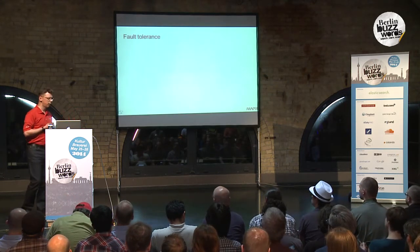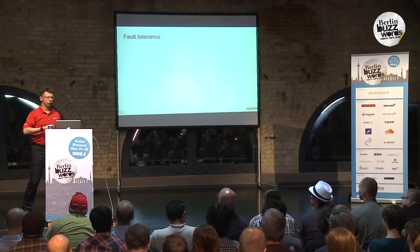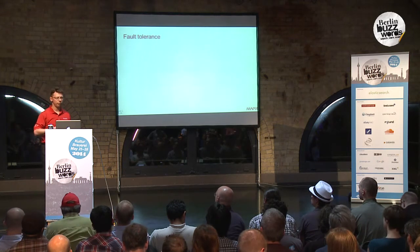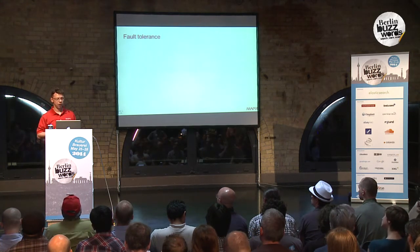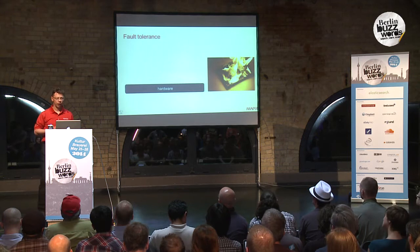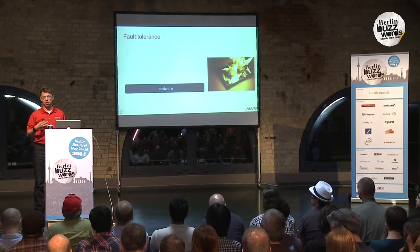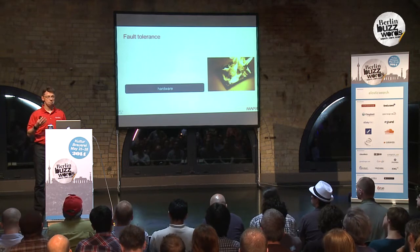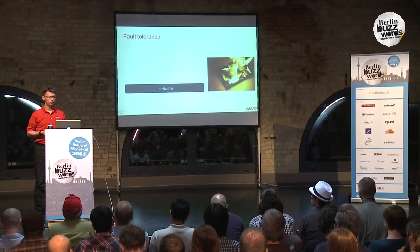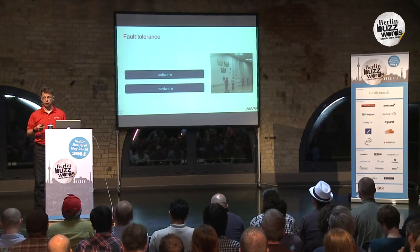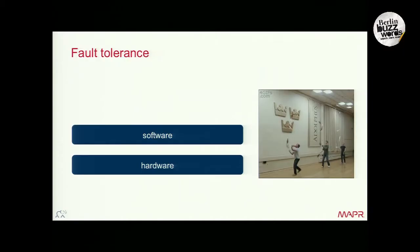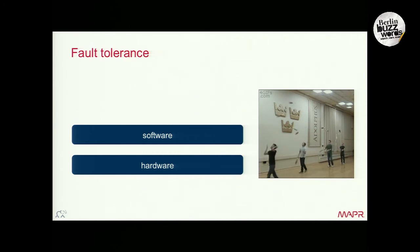Let's have a look at what fault tolerance might mean in a distributed system like Hadoop. We generally consider the hardware being commodity hardware — not that reliable. We compensate for that using software. Wherever you look — HDFS, HBase, whatever — you have mechanisms in there that compensate for hardware going down.